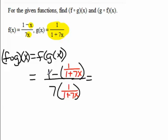So in the numerator, if I want to convert 1 into a fraction, I would have 1/1, and then I'm going to subtract 1/(1+7x) from that.